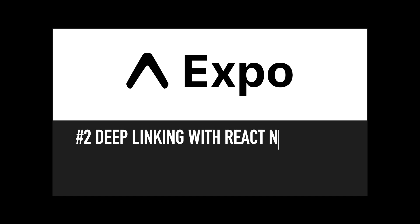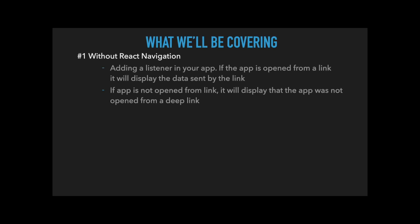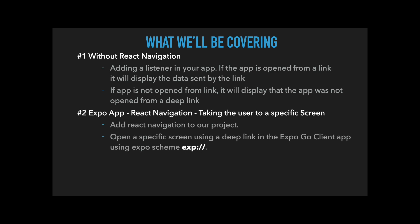Welcome to deep linking with React Navigation. This is part 2 of the deep linking with Expo series. In today's video we'll be covering three main use cases. The first one is without React Navigation — we'll add a listener in our app, and if the app is opened from a link we'll display the data received from the link. Our second use case will be introducing React Navigation version 5, and we'll use the Expo scheme to open a specific deep link which takes us to a particular screen.